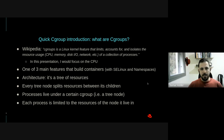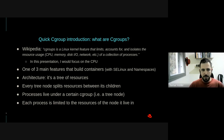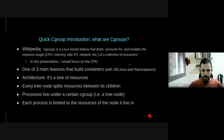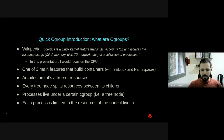A quick introduction to Cgroups. According to Wikipedia, Cgroups is a Linux kernel feature that limits, accounts for, and isolates resource usage like CPU, memory, disk, I/O, or network for a collection of processes. In this presentation I'll focus mainly on CPU, but we can manage a lot of resources for certain groups of processes. This is one of the three main features that containers are built upon. Its basic architecture is essentially a tree of resources, where every node splits resources between its children, and processes live under a certain Cgroup.